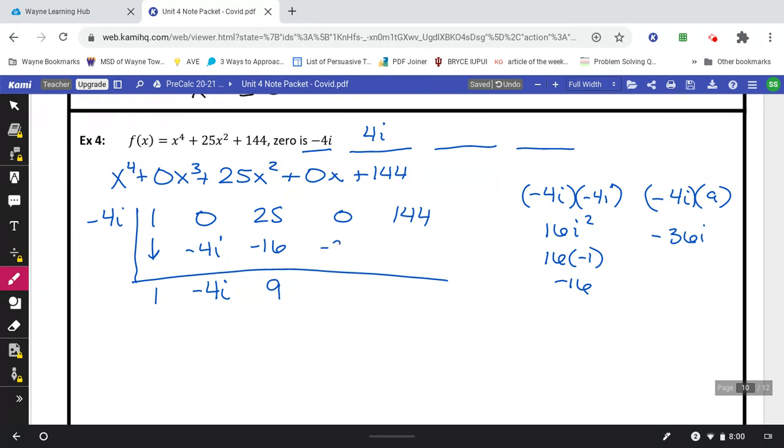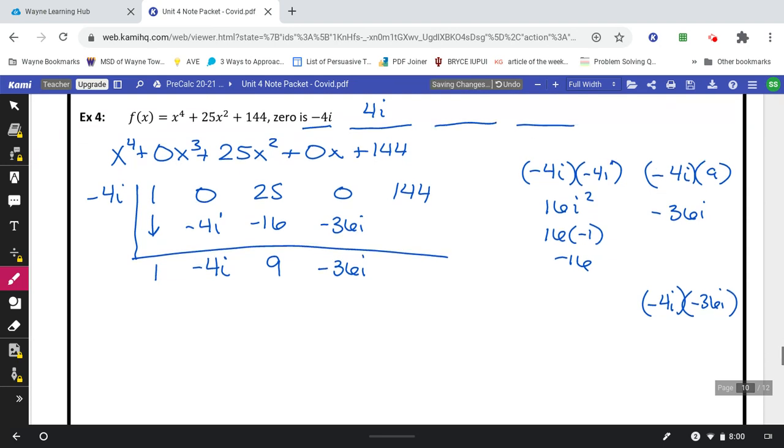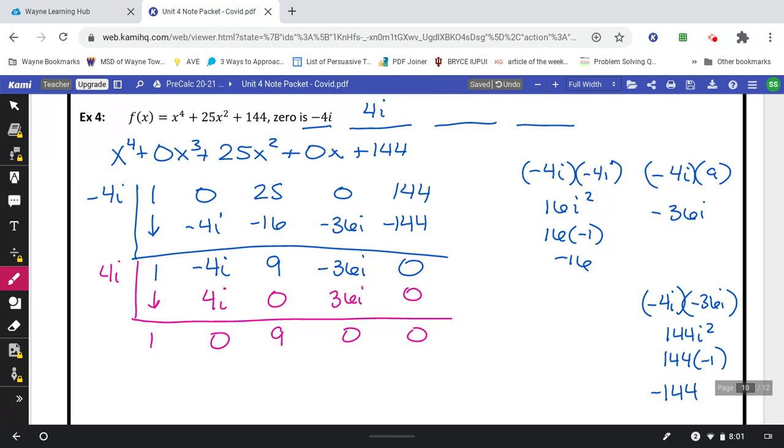Alright, so I got to zero on the first round. I'm going to do that same thing with the second round using the positive 4i. Again this one cancels out a lot faster, so again if you need to pause, try it, and then start the video back up. Alright, so we got another zero at the end which means we did that one correctly.